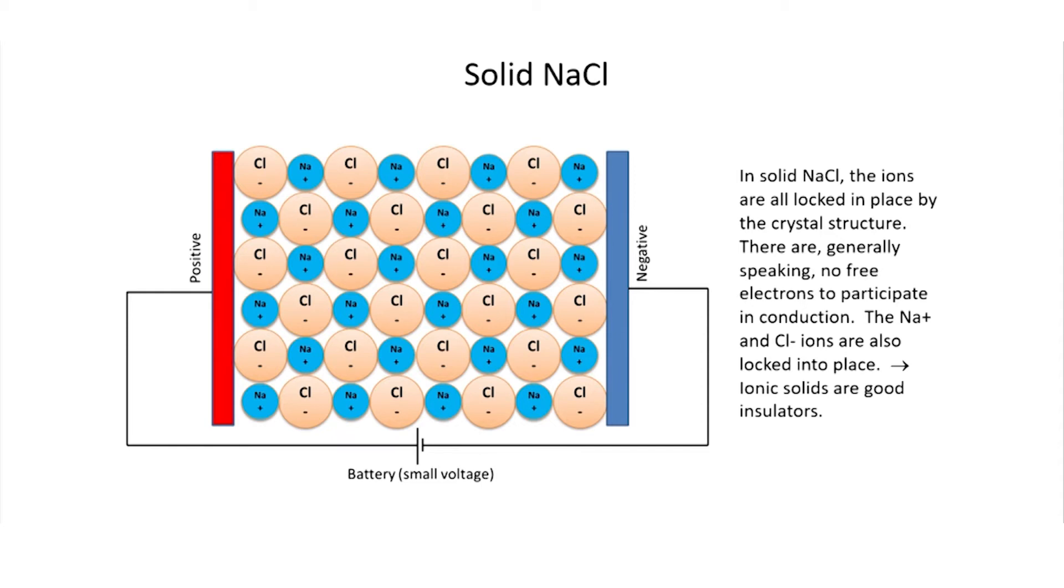You could imagine hooking up a battery to two electrodes, positive and negative, and start turning up the voltage on the battery. You're going to be able to reach an incredibly high voltage before you get the salt to become conductive. The electrons on the crystal are so tightly bound to their host atoms that it's difficult to attract them to the positive electrode or to repel them from the negative electrode.